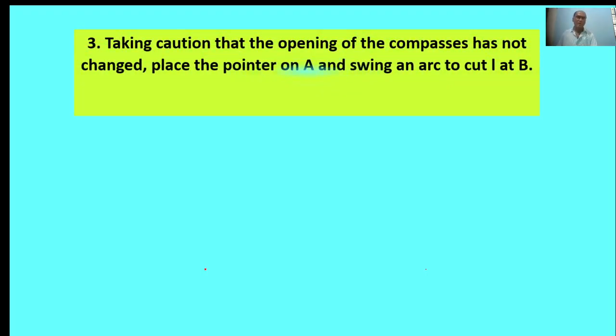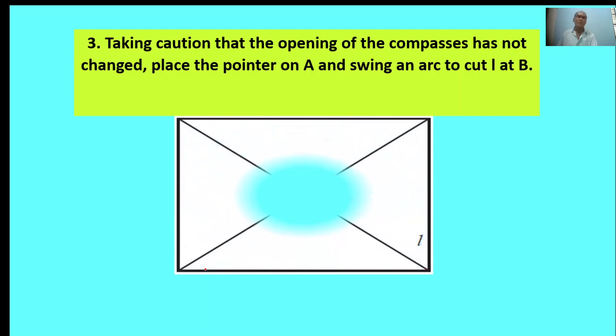Third point: Taking caution that the opening of the compass has not changed, place the pointer on A and swing an arc to cut L at B. This is called L line. Cut the L at B.